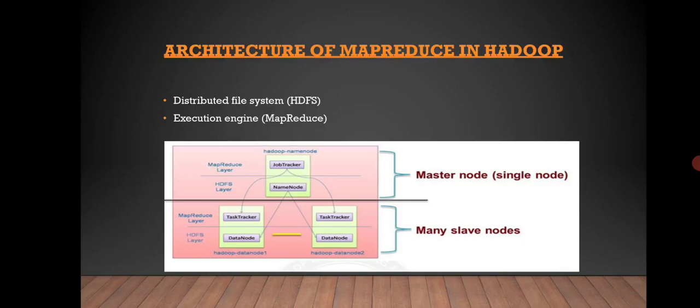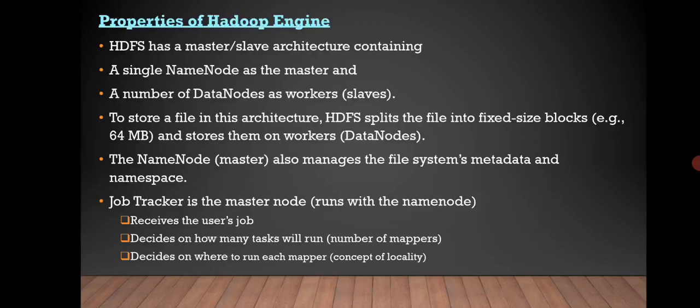This is the architecture of MapReduce in Hadoop. Here we can see the distributed file system that is HDFS and the execution engine that is MapReduce. This diagram shows a master node, a single node, and many slave nodes. Properties of Hadoop engine: the HDFS has a master-slave architecture containing a single name node as master and a number of data nodes as workers.